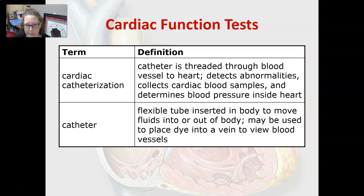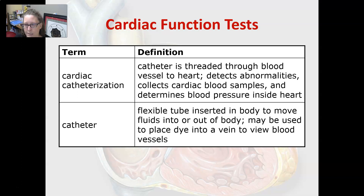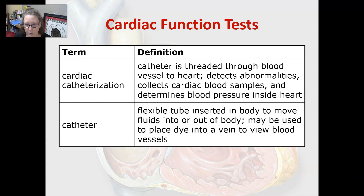Cardiac catheterization involves a catheter threaded through the blood vessel to the heart. It's usually started at the femoral artery and goes up the aorta into the heart to look at the coronary circulation. It can detect abnormalities, collect cardiac blood samples, and determine the blood pressure inside the heart. A catheter is a flexible tube inserted in the body to move fluids in or out, and it may be used to place dye into a vein, which is what happens during cardiac catheterization — that dye allows them to view the blood vessel.